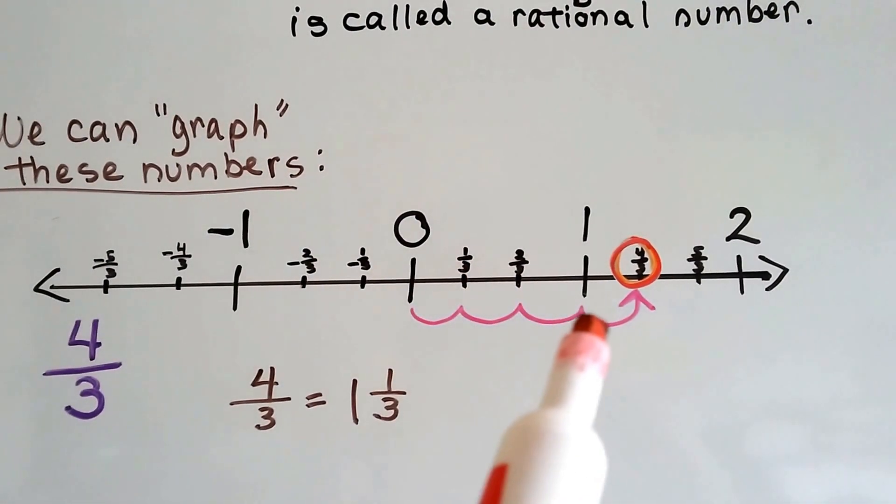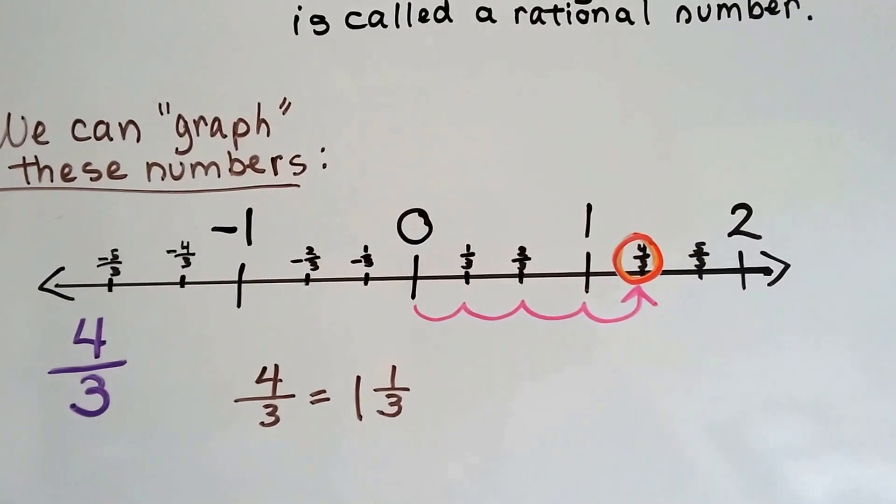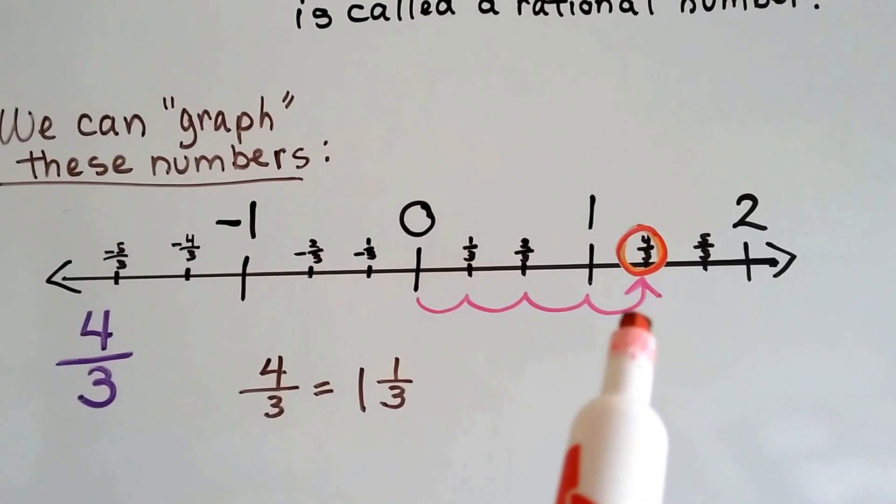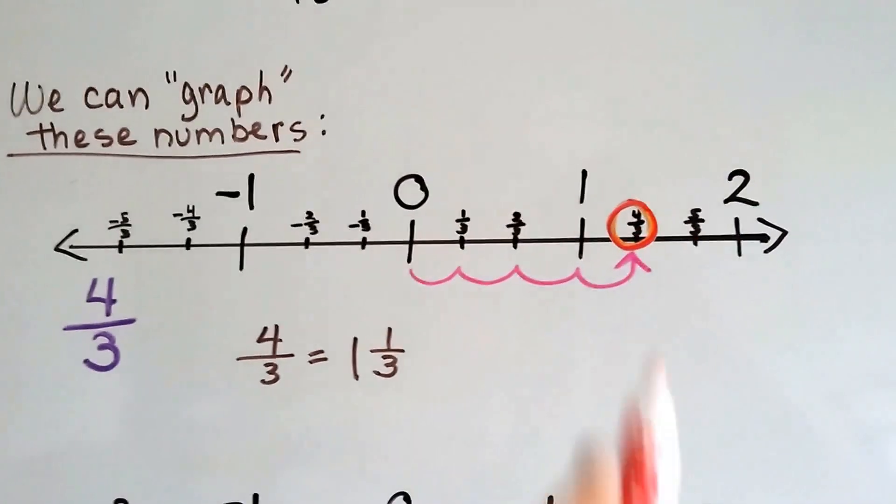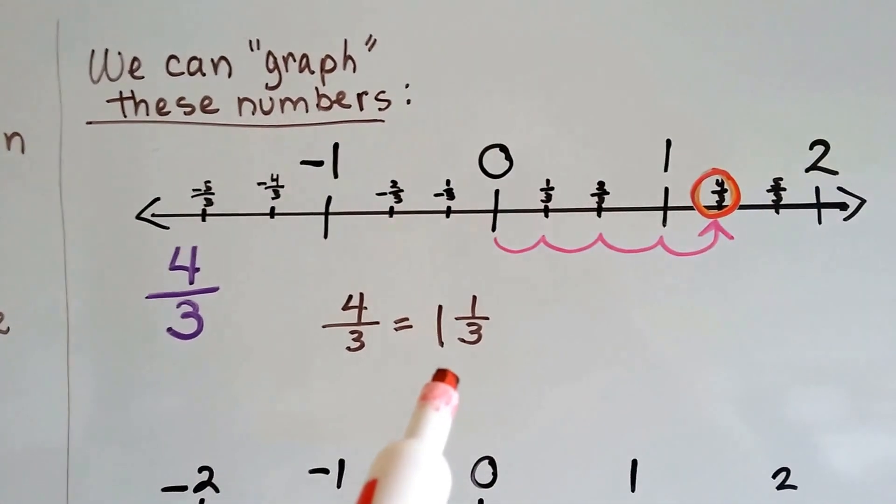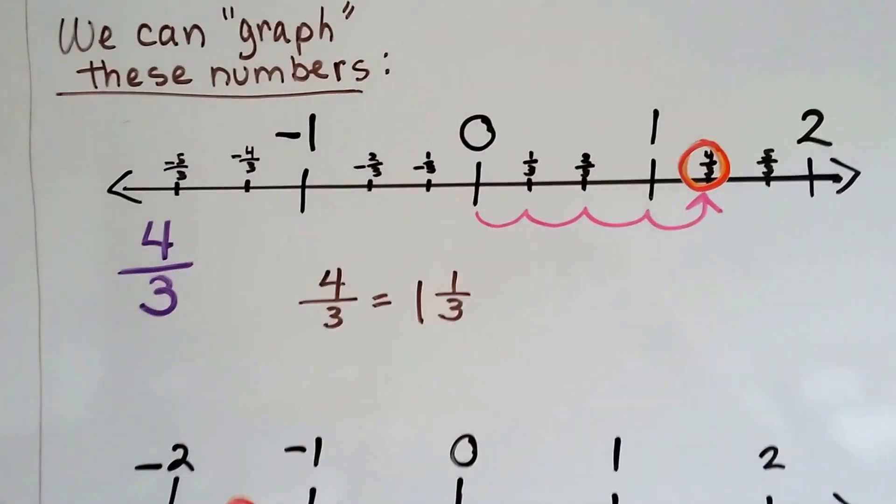One-third, two-thirds, the one would be three-thirds, and there's four-thirds. So that's where our point would be. To graph four-thirds, we'd put our point right there. You can see four-thirds, if we simplified it, it would be one and one-third.